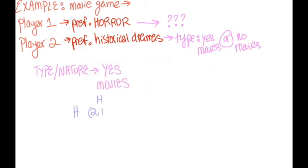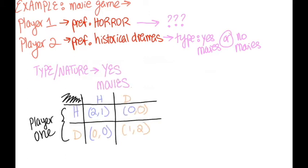If player 2's type, or nature, is to go to the movies, the payoff matrix is as follows, based on the players' movie preferences.